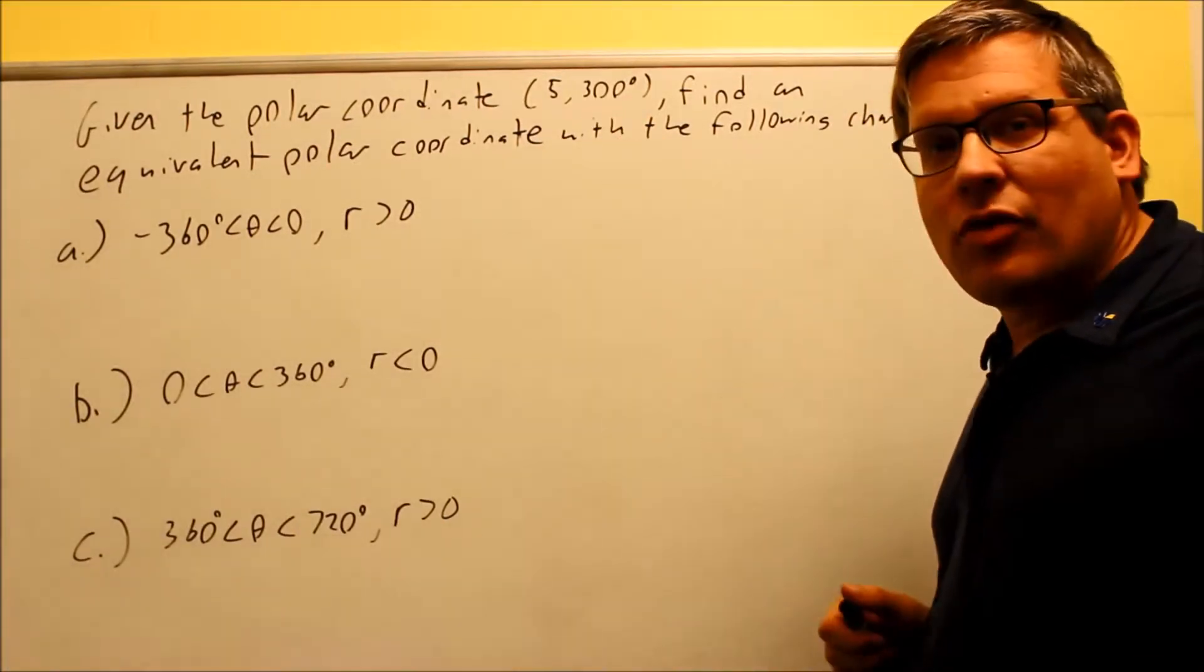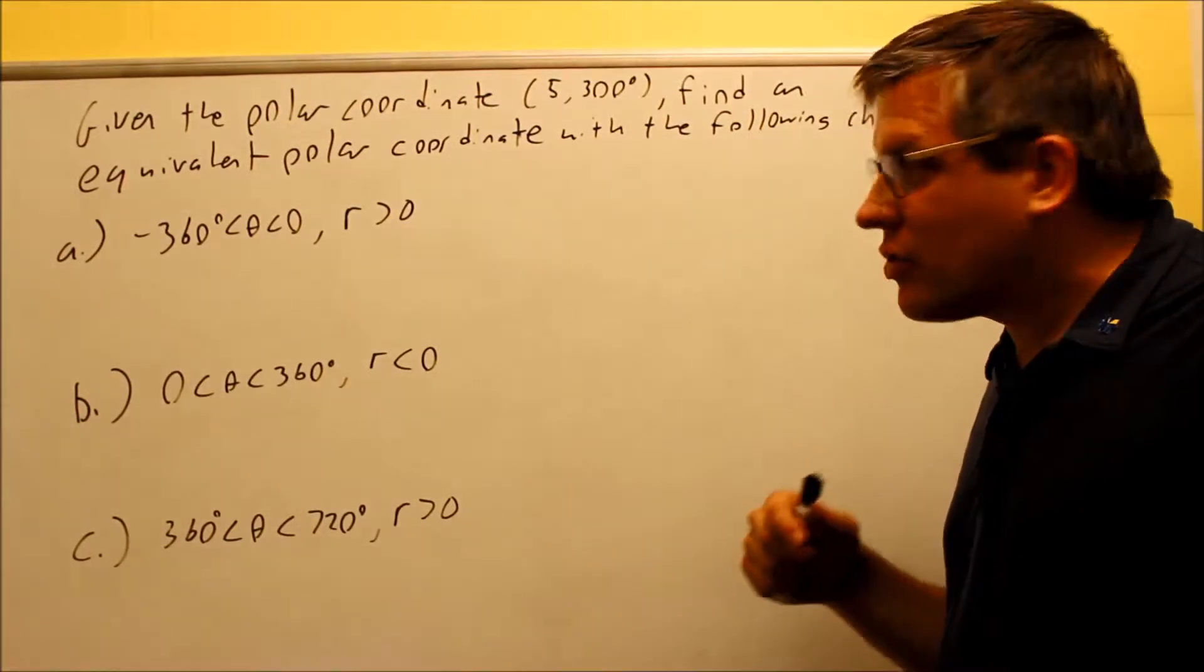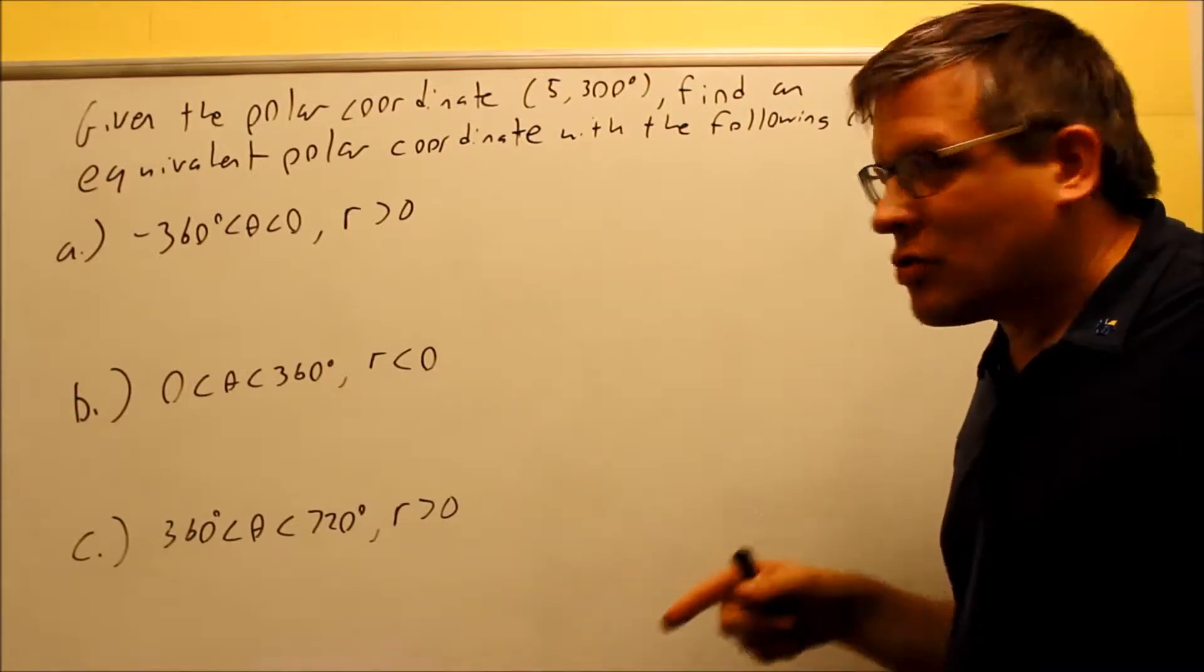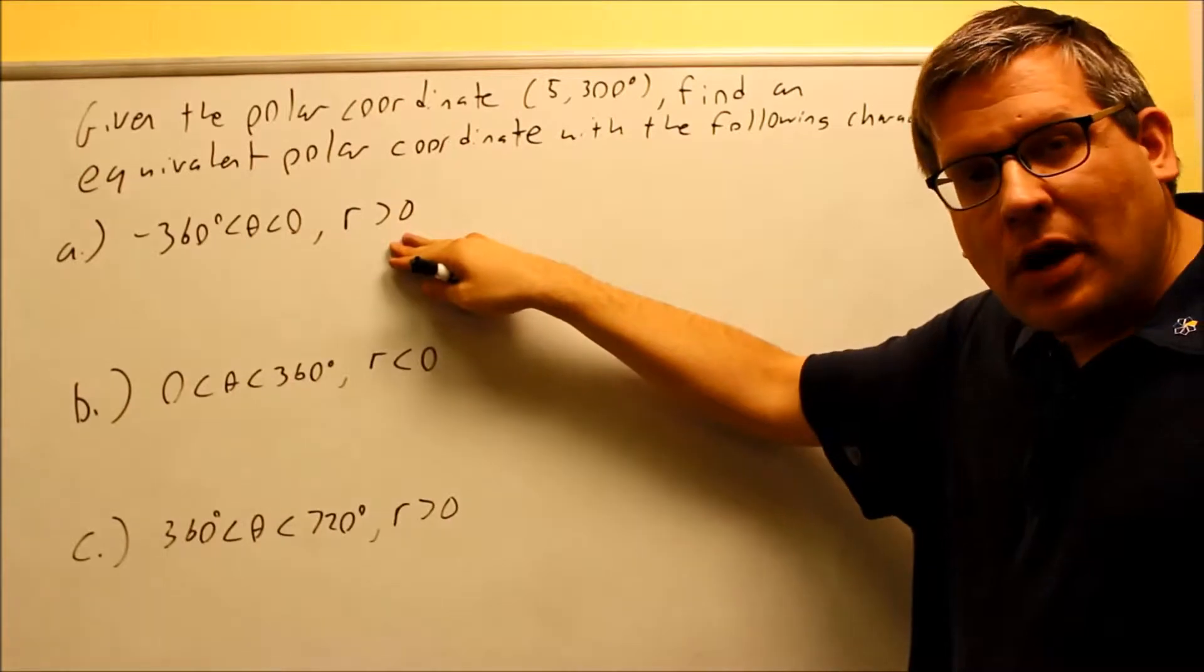We're given 5 and 300 degrees, and we want to find an equivalent point, in other words we want to find a point that allows us to arrive at the same spot as that one, but we have these characteristics. The first one says that we've got to have a negative angle, and the r value needs to be positive.